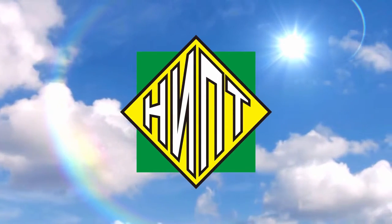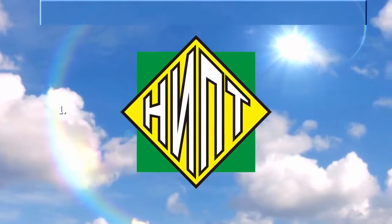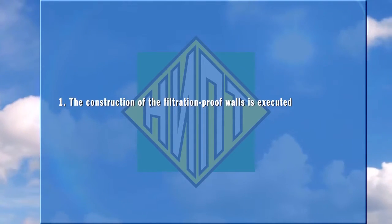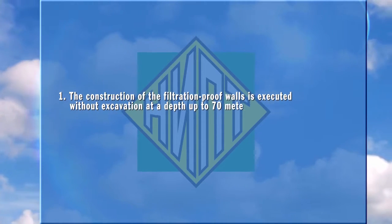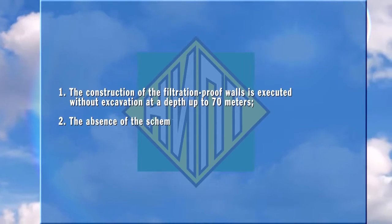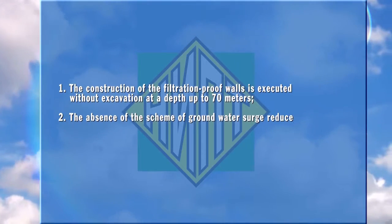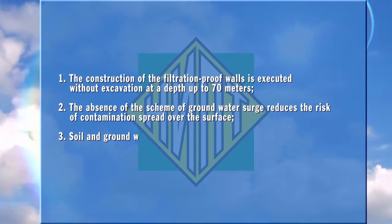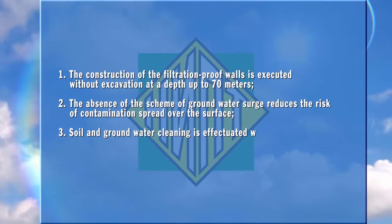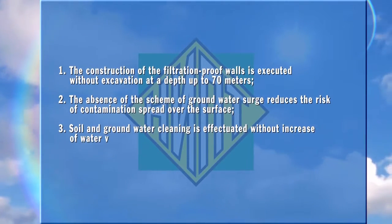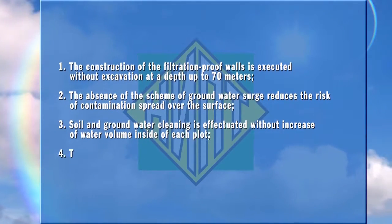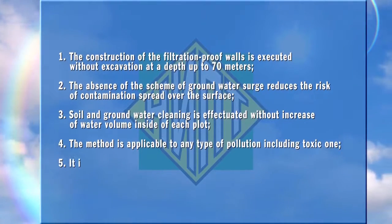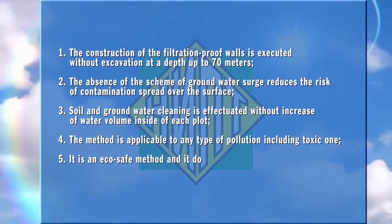Specific features of this method include: filtration-proof walls constructed without excavation at depths up to 70 meters; the absence of groundwater surging, which reduces the risk of contamination spread over the surface; soil and groundwater cleaning without increasing water volume inside each plot. The method is applicable to any type of pollution, including toxic waste, and is an eco-safe method with no negative impact on the environment.